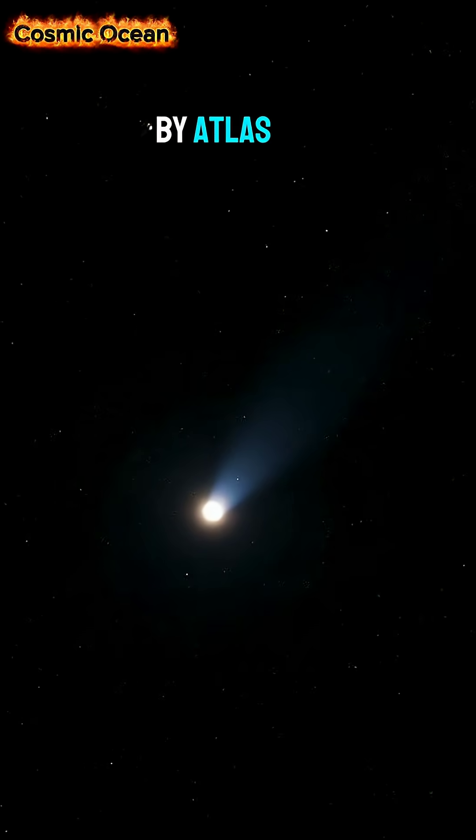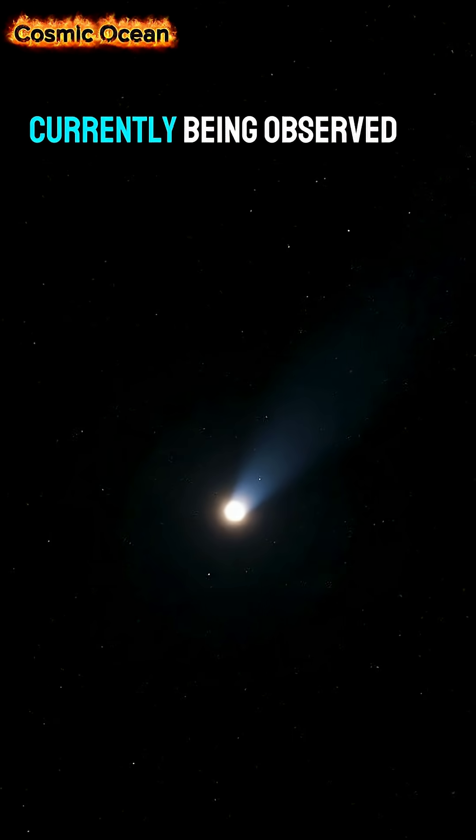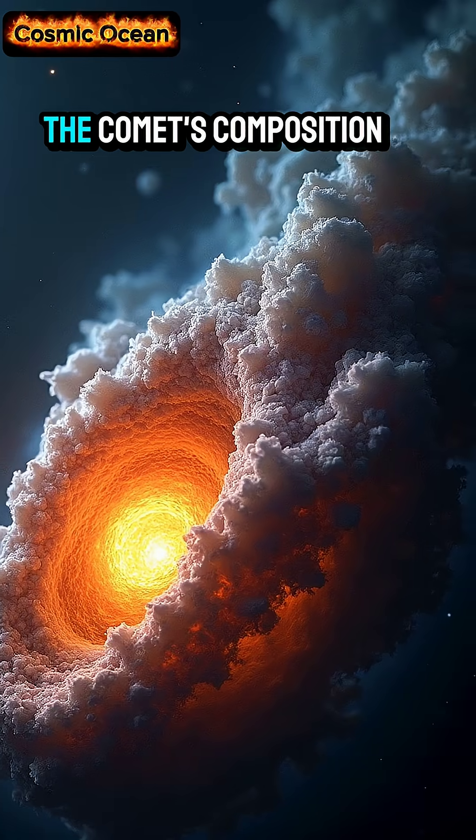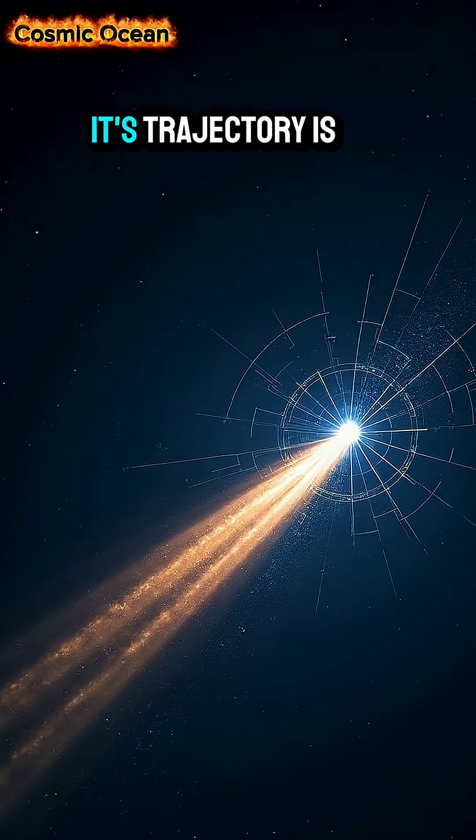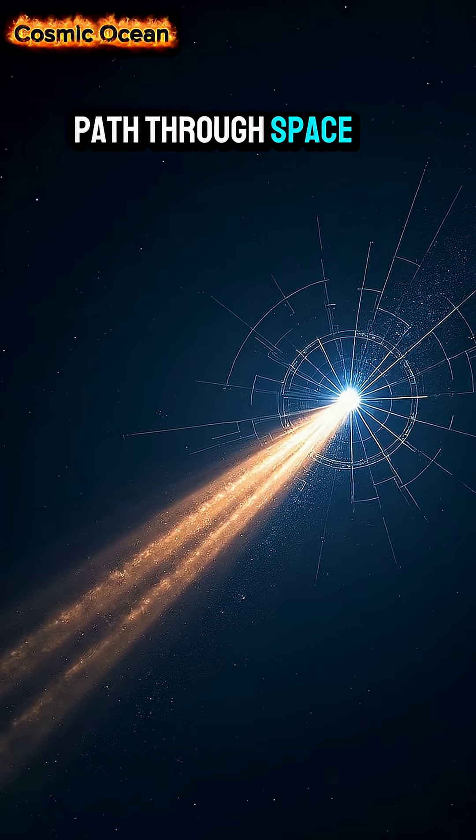Comet 31 divided by Atlas is a celestial object currently being observed by scientists. The comet's composition includes various frozen materials and dust. Its trajectory is being tracked to understand its path through space.